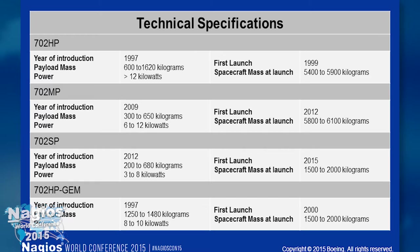For those interested in technical specs, the spacecraft line up by payload mass and power — high power, medium power, and low power. The actual spacecraft mass is pretty consistent across models, driven by launch providers since rockets can only carry so much. The first one went up in 1999, which is when my career started. I was around for the very first HP launch, which was pretty exciting — it's still out there doing its job.